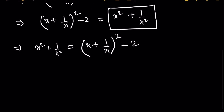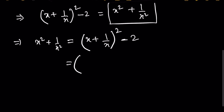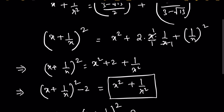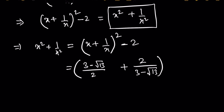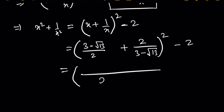Now if we approach it this way, the calculations will be easier. The value of x is (3 minus root 13) divided by 2. So x plus 1/x means (3 minus root 13)/2 plus 2/(3 minus root 13), whole squared minus 2. We take the LCM of 2 and (3 minus root 13) by multiplying them: 2 times (3 minus root 13).